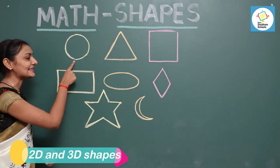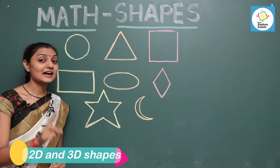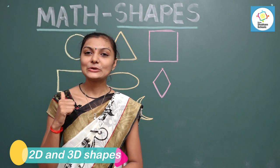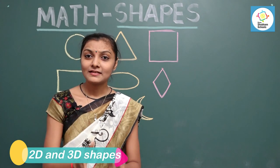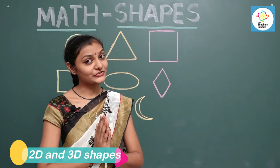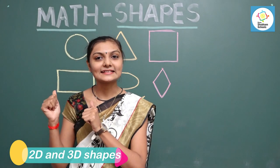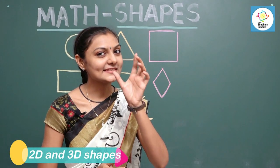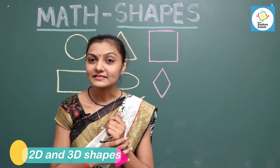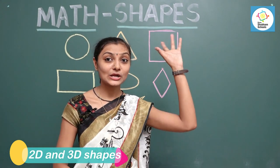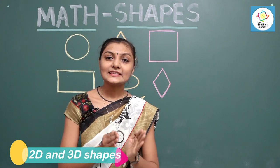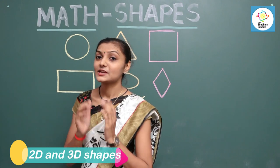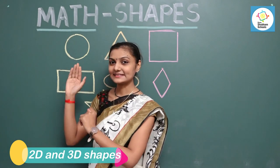This is a circle. A circle has no sides and no corners. It looks like a round shape. There are many things which we see in the shape of a circle, like rings, coins, bangles, and many clocks. These all are examples which show a circle shape.